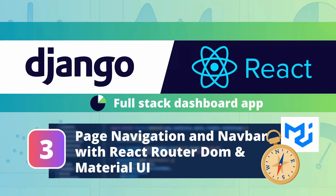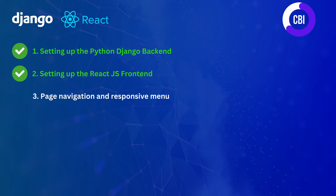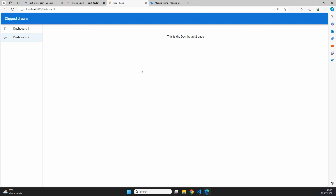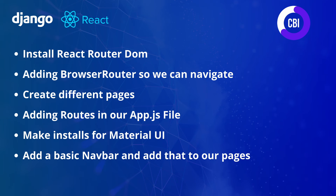Hi everyone and welcome to a new video on the CBI channel. In this tutorial series we're creating a Django and React dashboard application in which we're going to visualize the data inside of our Django backend with some nice looking charts on our React.js frontend. This is the third video in this series. We've already completed the initial setup of our Python Django backend and React.js frontend. In this video we're going to enable page navigation using React Router DOM and add a responsive navigation menu using components from Material UI. To realize that we're going to be following six steps.